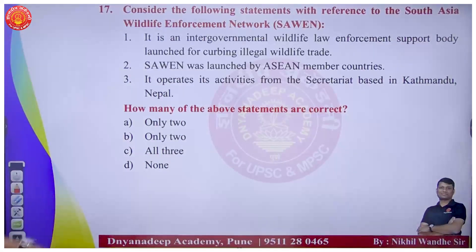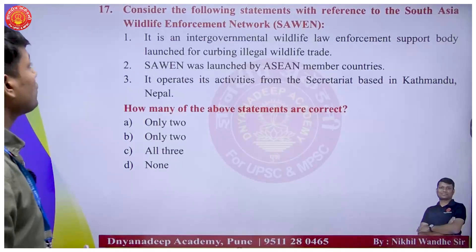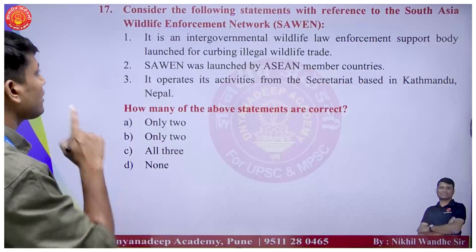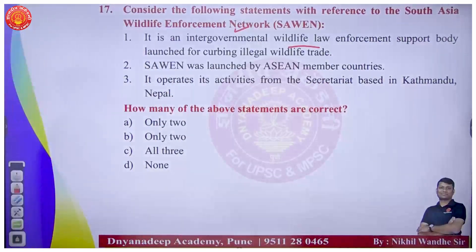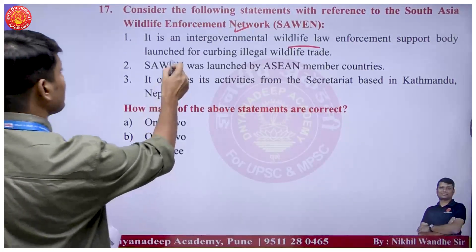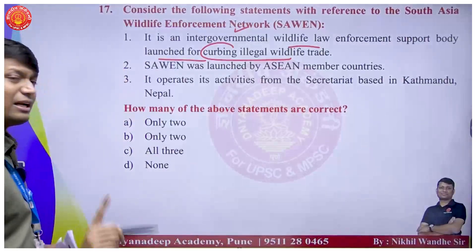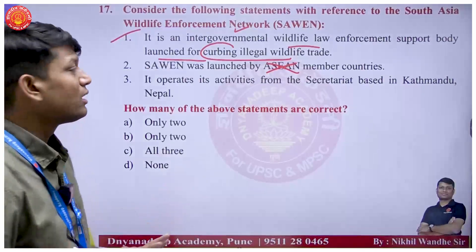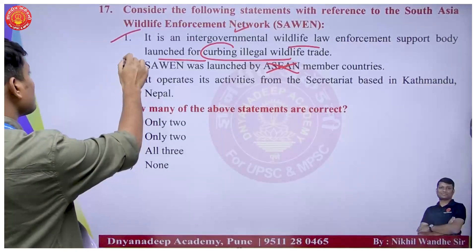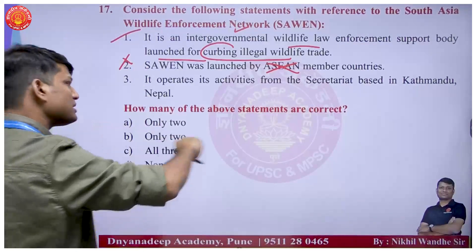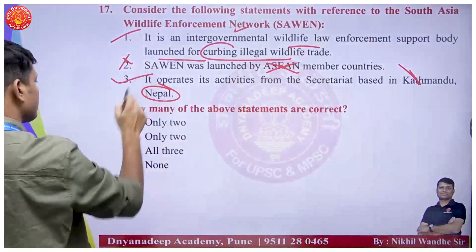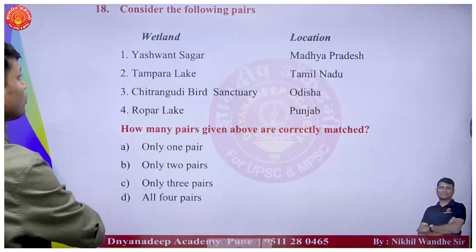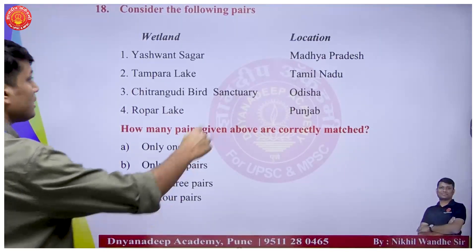Question on SEVEN - South Asian Wildlife Enforcement Network. It is an intergovernmental wildlife law enforcement support body. It was launched for curbing illegal wildlife trade. However, the statement that it involves all South Asian countries is incorrect - not all South Asian countries are members. It operates from Kathmandu - that is also correct. Option B is the correct answer.